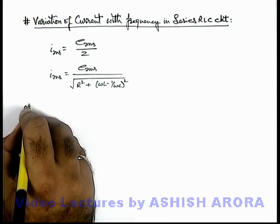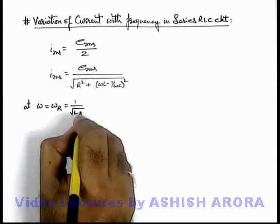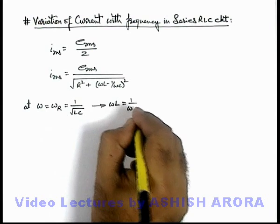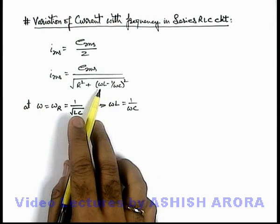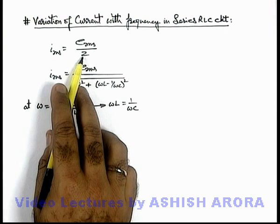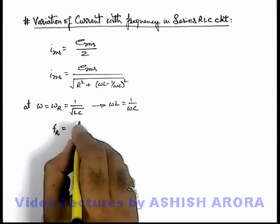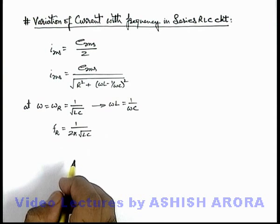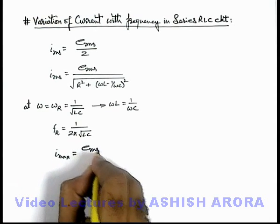At ω equal to ω_r, which we term the resonant frequency, given by 1 divided by √(LC), the inductive reactance ωL becomes equal to the capacitive reactance 1/ωC. At this point, the reactive effects in the circuit become zero, and the impedance acts as pure resistance. The resonant frequency f_r can be written as 1/(2π√(LC)). At this frequency, the value of current becomes maximum, equal to E_rms divided by R.